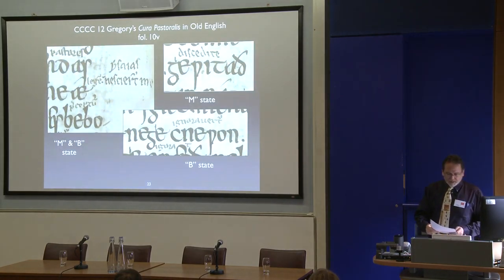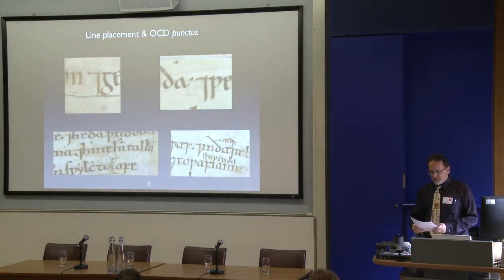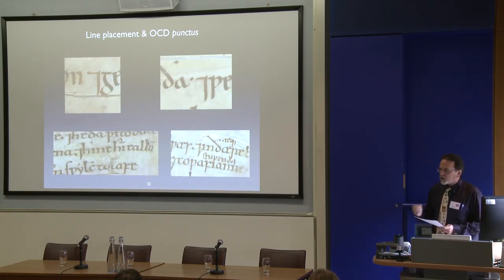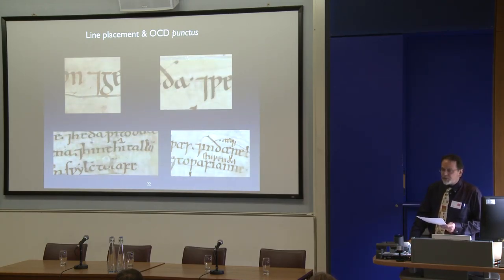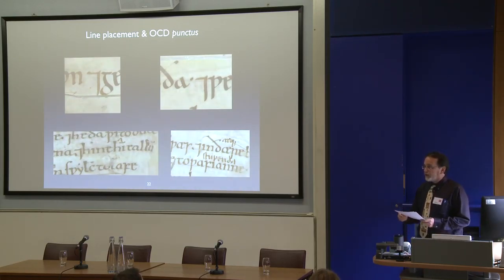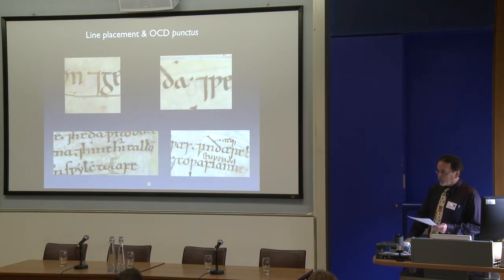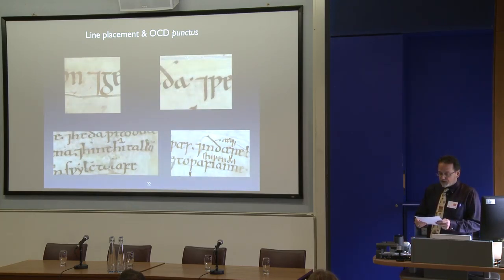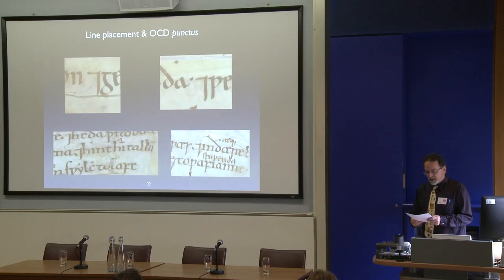Then position in the sentence: especially in cases where the shape and ink color of the intervention is so close to the original, the giveaway may be where the mark appears in the sentence. Tremulous wasn't really repunctuating the text syntactically. He used his interventions to help him sound out the Old English, and one result of this is that punctuation marks appear where they really have no business being — frequently in places where an analysis of the original punctuation shows they would not have been placed by the Anglo-Saxon scribe.